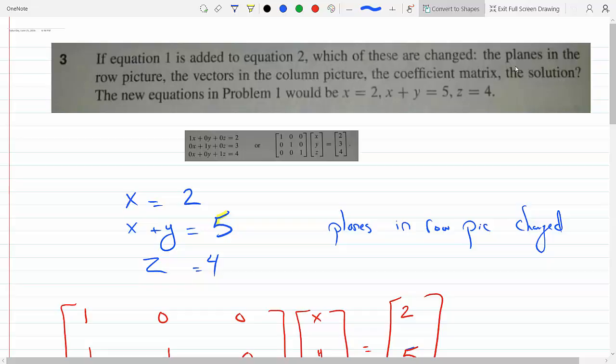It says, if equation 1 is added to equation 2, which of the following are changed? And these are the equations, shown in matrix form. So the first equation is x equals 2.